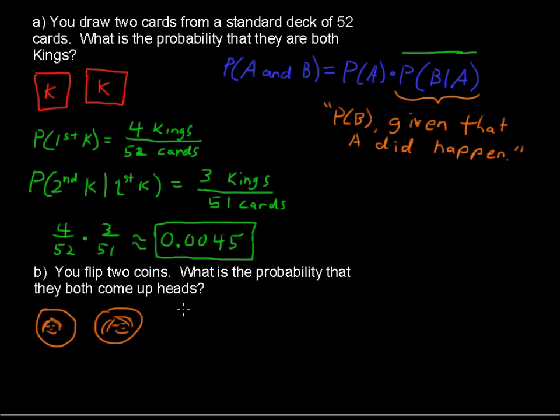With this one, these are called independent events, because the first flip does not affect the probability of the second flip. There is no physical change on the other coin, or even if you flipped the same coin twice, there is no physical change. Just like the deck of cards, there was a physical change. We took out a king, and we had fewer cards left in the deck.